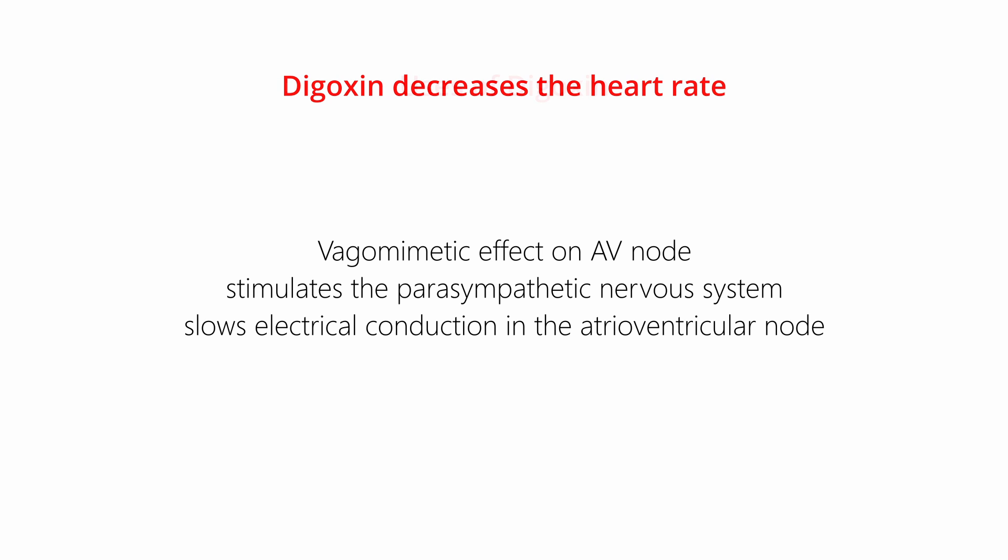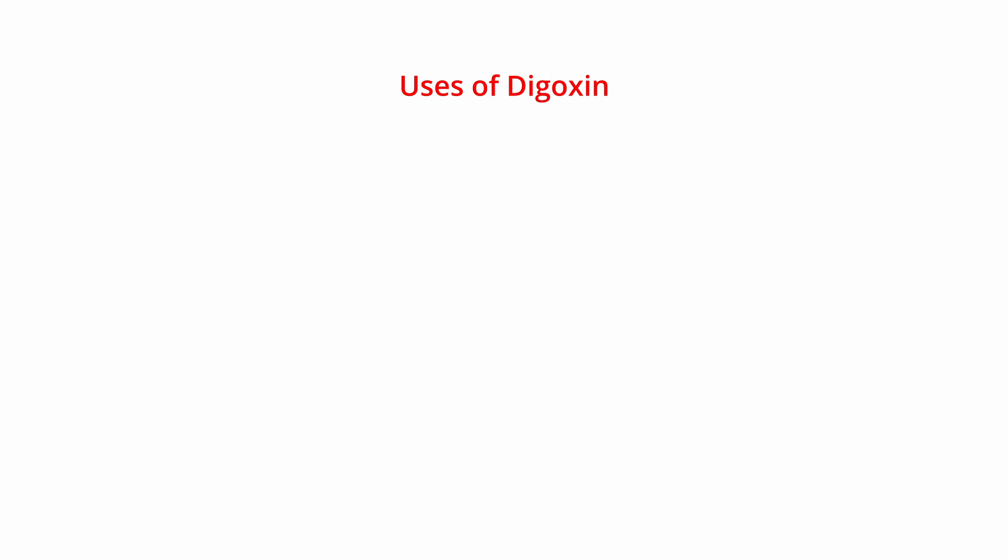So the uses of digoxin are, as it increases the force of contraction, it is used in heart failure with reduced ejection fraction. As digoxin decreases the heart rate, it is used as second-line drug to treat atrial fibrillation and atrial flutter.